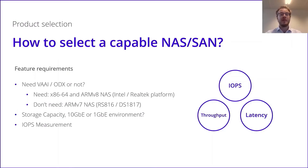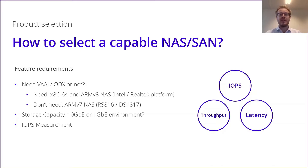So how do we select a capable NAS or SAN for virtual machine storage? First, we need to take into consideration which features are required. For example, do we need VAAI or ODX? If you need it, you will need an x86-64 or ARM V8 NAS, available with our Intel or Realtek platforms. If you don't need this, an ARM V7 NAS like the RS816 or DS1817 is sufficient. Other important components are storage capacity, networking infrastructure — 10 gigabit versus 1 gigabit — latency, and IOPS to ensure your virtual storage environment has the right performance.